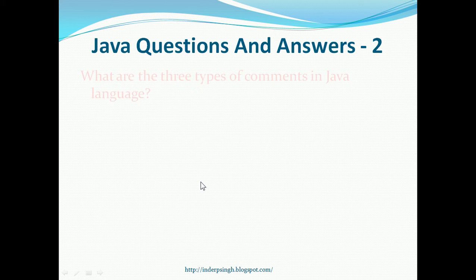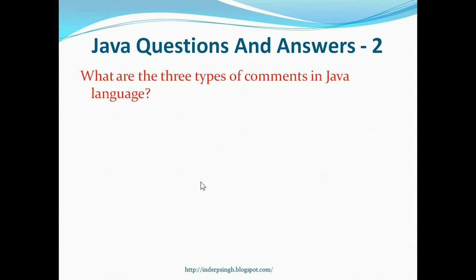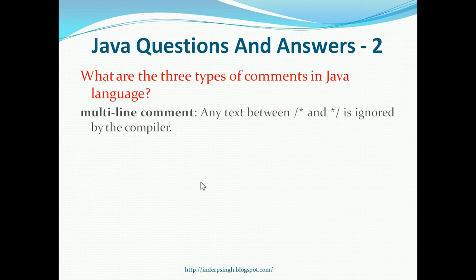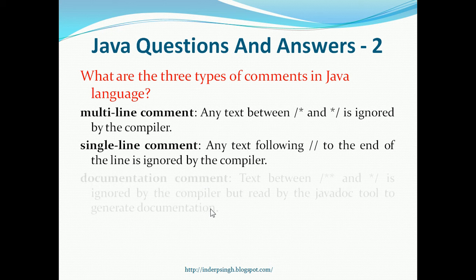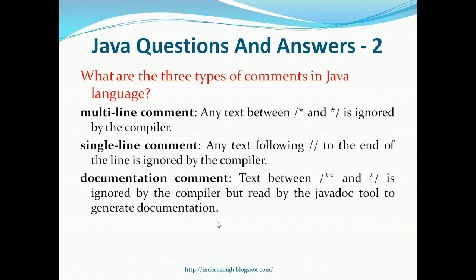Question 2. What are the three types of comments in Java language? The first type is a multi-line comment. Any text between slash star and star slash is ignored by the compiler. The second type is a single-line comment. Any text following two forward slashes to the end of the line is ignored by the compiler. The third type is a documentation comment. Text between slash star star and star slash is ignored by the compiler but read by the javadoc tool to generate documentation.